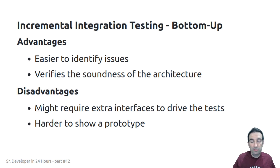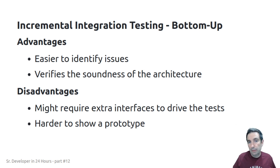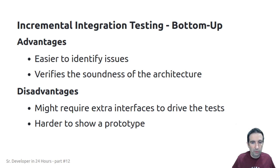What are some of the advantages of testing things from the bottom up? One advantage is that it makes it easier for us to identify issues. Since we're building things from the bottom up we're going to have a lot more tests and a lot more interfaces to test each layer of the architecture as we build it up. Having all of those tests makes it easier to isolate where a problem might be. It also verifies the soundness of the architecture because we're building things from the ground up.